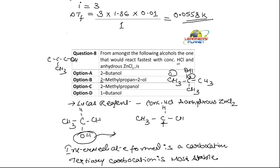So, here it is 2-methyl-propen-2-ol. So, this was the question from alcohols. And the marking scheme was plus 4 minus 1.